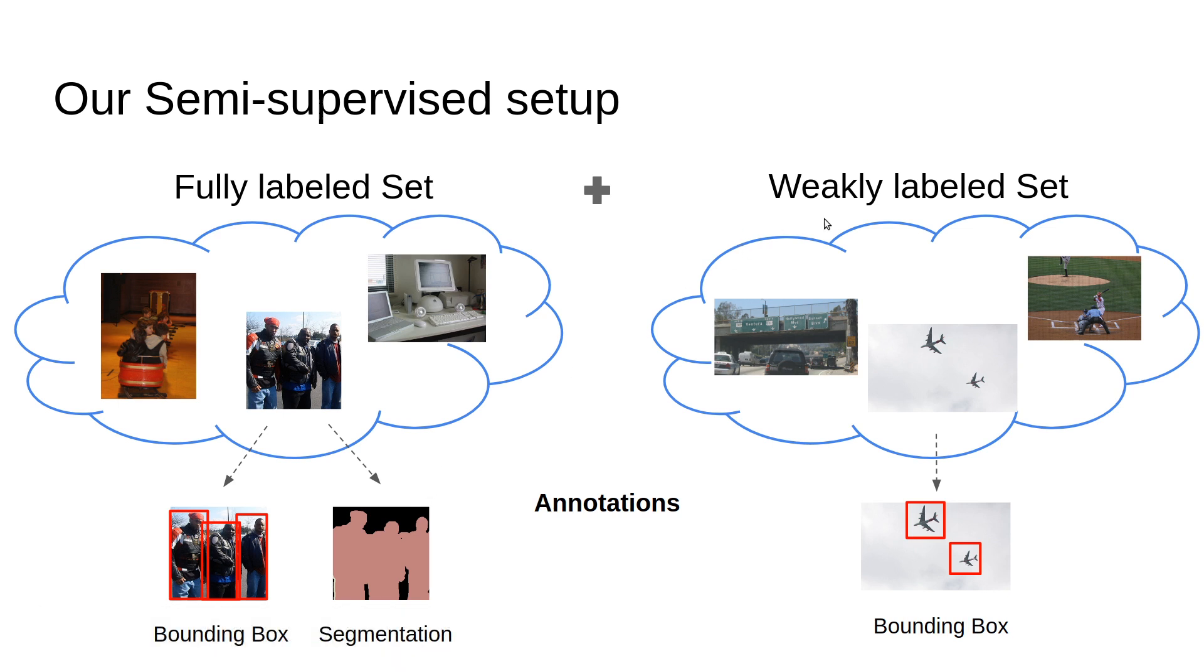On the other side, we have a weakly labeled set that only has bounding boxes of the objects. The question is how can we make a semantic segmentation network utilizing these two kinds of datasets.